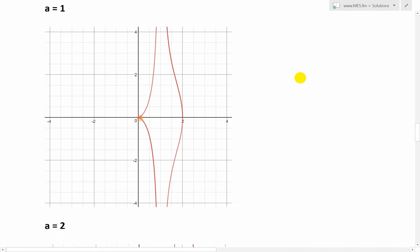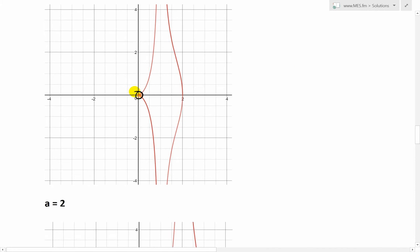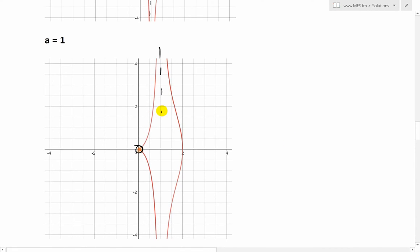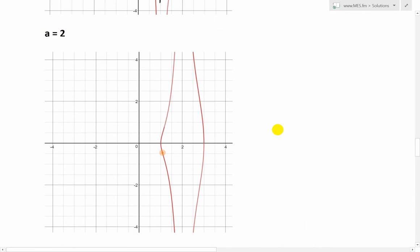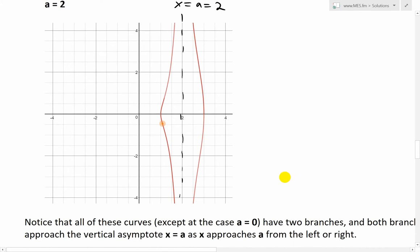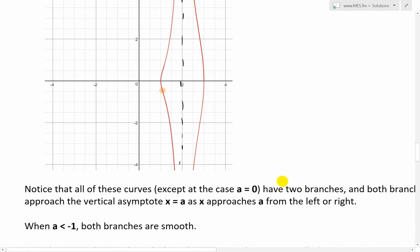And then when a equals to 1, we're going to have the exact same thing, a sharp point. And again, the asymptote line here at x equals to a, which equals to 1. And then last point here, everything is smooth across here. And what we have is at the 2 value. So x equals to a, which equals to 2. So every single point, except when a equals to 0, we have asymptote line at x equals a.